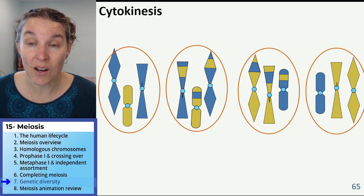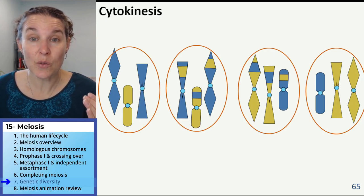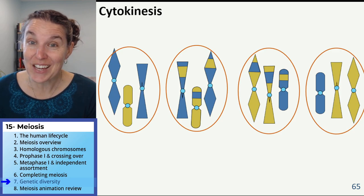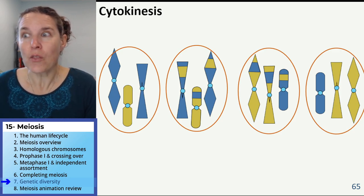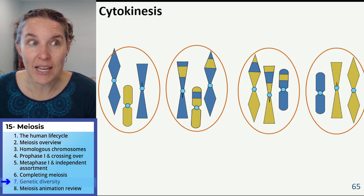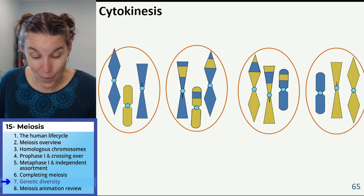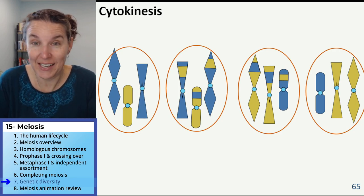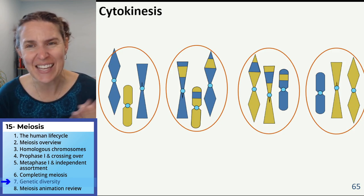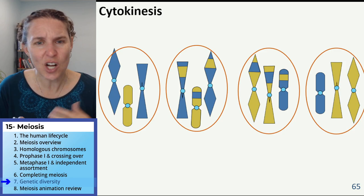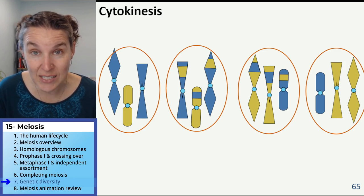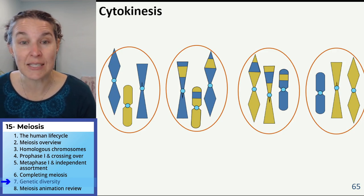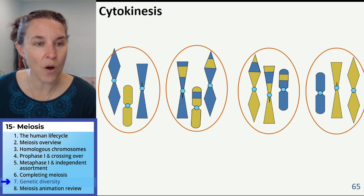I'm bringing it back, y'all, because the whole purpose of meiosis is to generate genetic diversity for sexual reproduction. The whole purpose of sexual reproduction is genetic diversity. We're going to have a whole lecture on sex and how crazy it is and how energy expensive it is. And even meiosis — this is a really complicated, energy-intensive process that's worth it because of the genetic diversity. So let's summarize.